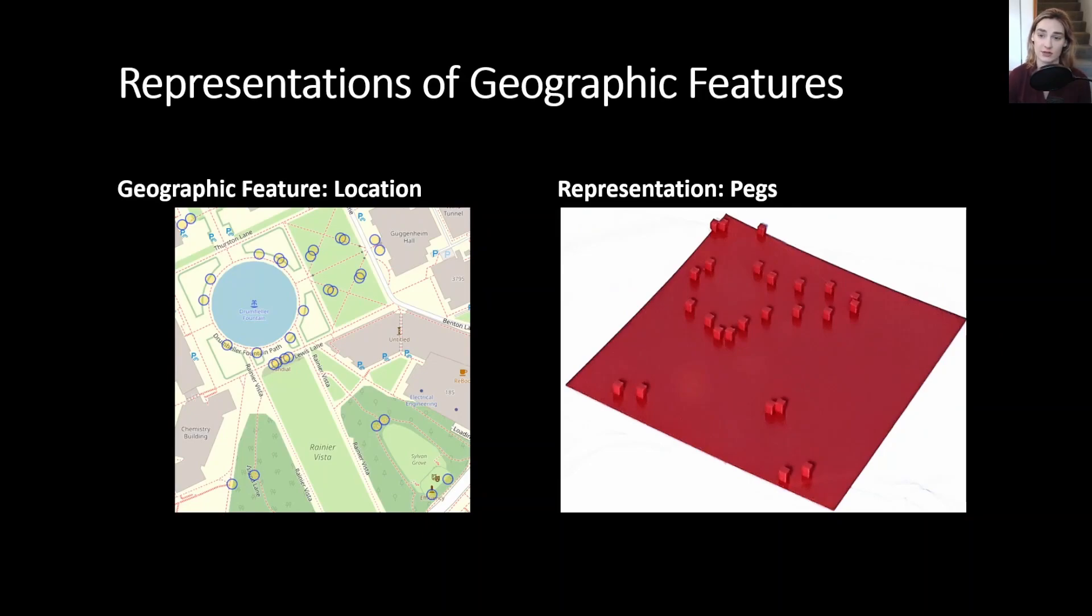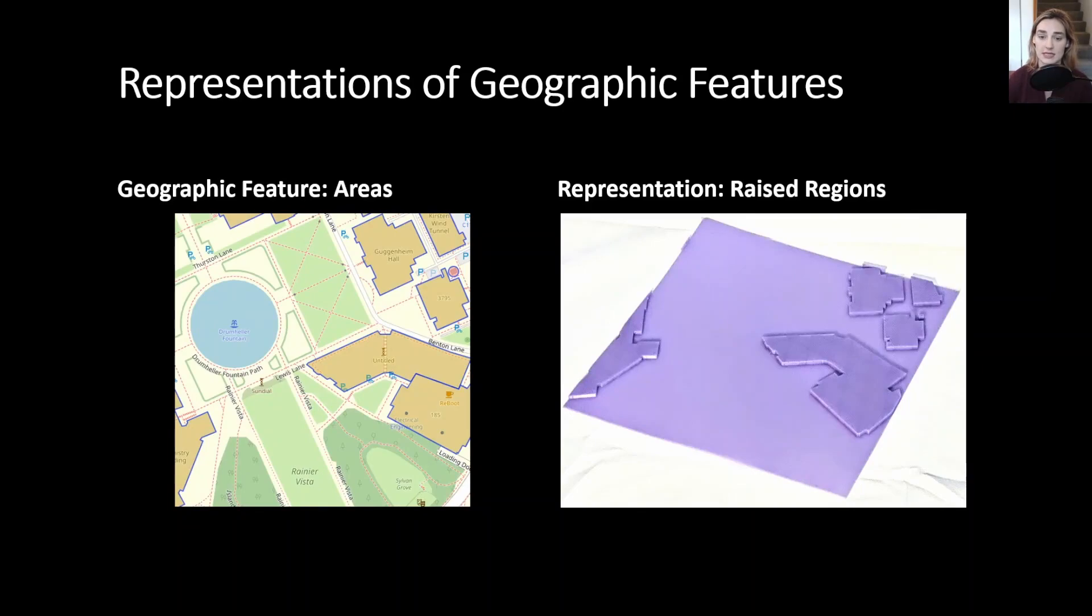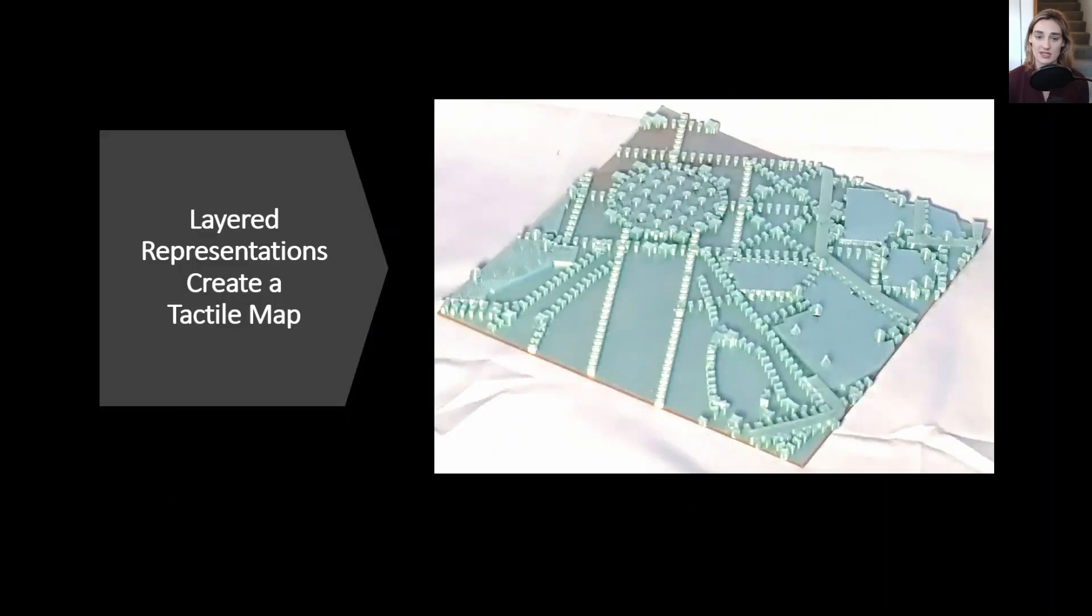So for instance, we can represent different locations as pegs, different pathways and road networks as line networks, and different regions like buildings, green spaces, and water spaces as different raised regions on the map. We can then layer these representations together onto a tactile map to create a map that represents a variety of pieces of information.